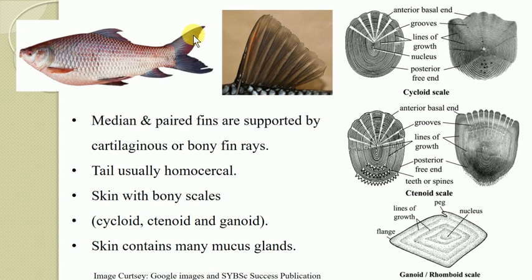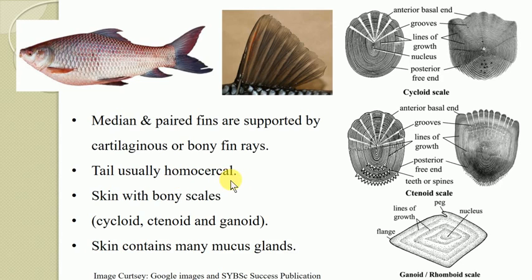The tail is usually the homocercal type. In a homocercal tail, the upper lobe is known as the epicordal lobe and the lower lobe is the hypocordal lobe. If the tail fin has equal size and shape of the epicordal lobe and hypocordal lobe, with the vertebral column running dorsally up to the base of the tail and both lobes being similar, such a tail fin is called homocercal. All Osteichthyes species contain this homocercal type of tail fin under normal conditions, though in some cases it may vary.